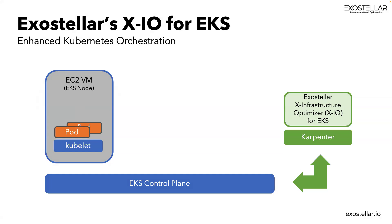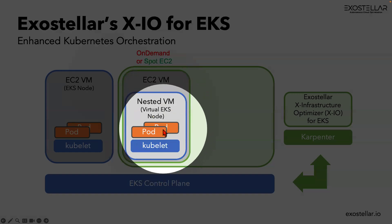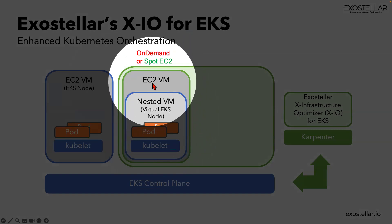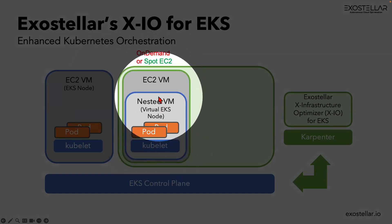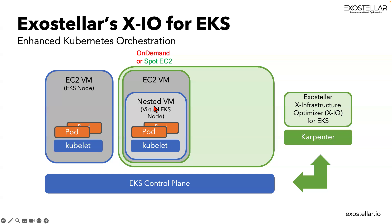If you're already using Karpenter, you don't have to replace anything — you can continue to use Karpenter for scheduling your workloads across all different instance types. What Exos Data's XIO adds is the ability to create what they call a nested VM, or virtual EKS node, which can run from an on-demand instance or a spot instance. To save money, you would choose to run from a spot instance.